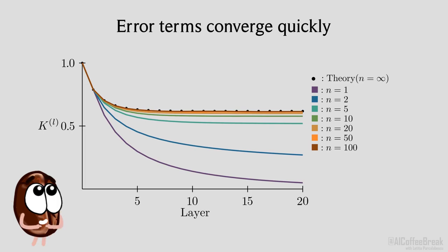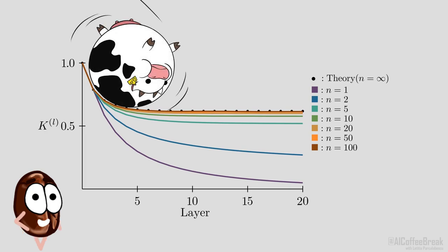Furthermore, it seems that for larger values, the variance converges to a fixed value, so at some point the error levels out. This, of course, depends on the variances of the weights and biases and the activation function, so this is by no means a general result. But it shows that it is possible to get a good correspondence between theory and practice even for relatively narrow neural networks.